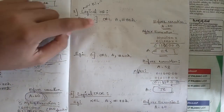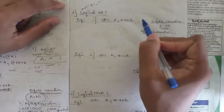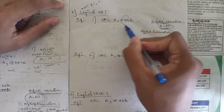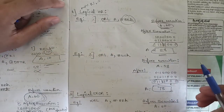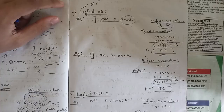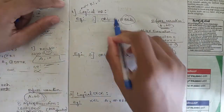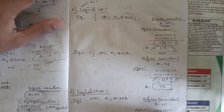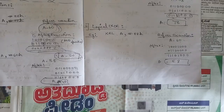Similarly for logical OR, the opcode is ORL. We give the value of A along with another number and perform the OR operation according to the truth table; the result is stored back in A. Similarly, logical XOR performs the XOR operation on A with the specified operand.